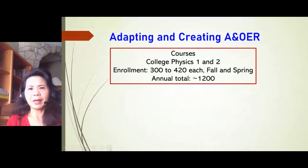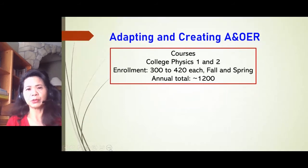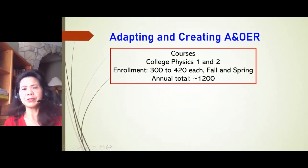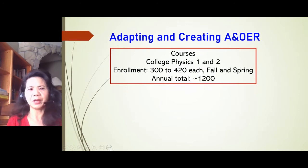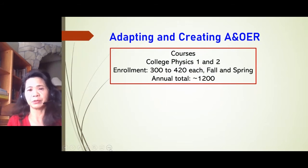I teach College Physics 1 and College Physics 2 every year. In fall and spring semesters, the typical enrollment of each course is 300 and 420, so the total annual enrollment of these two courses together is about 1,200. This is a big class.